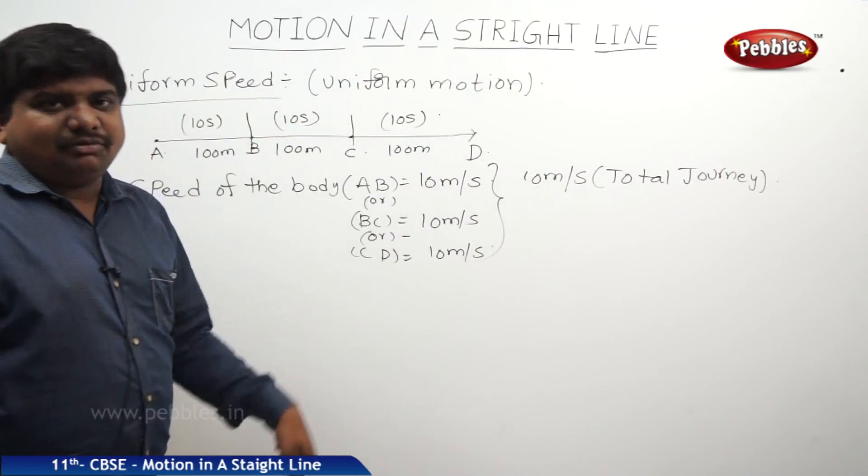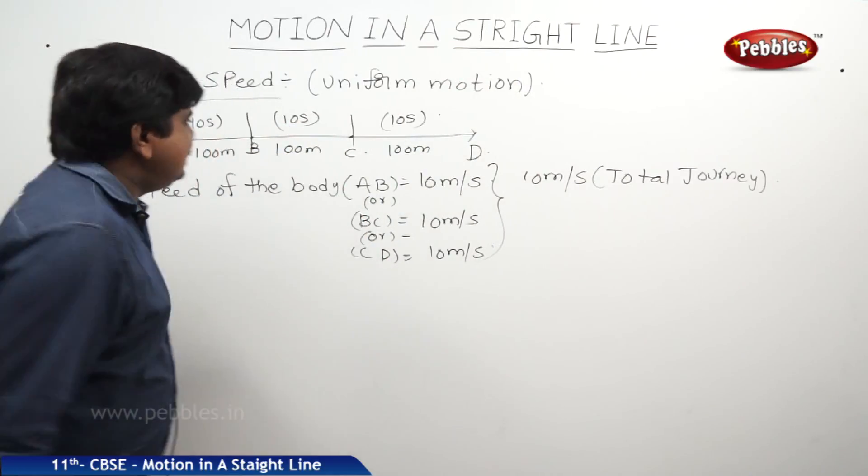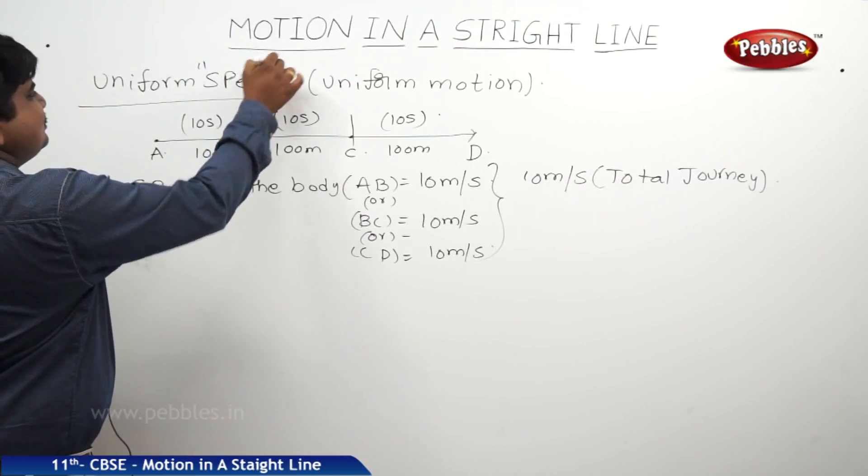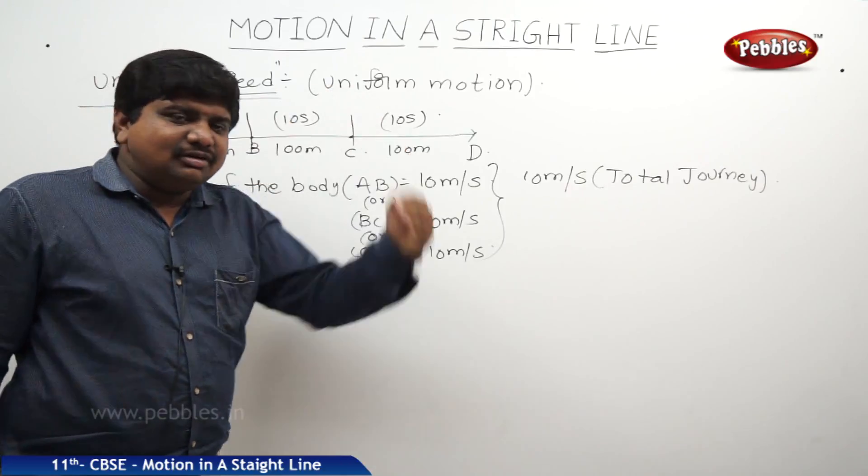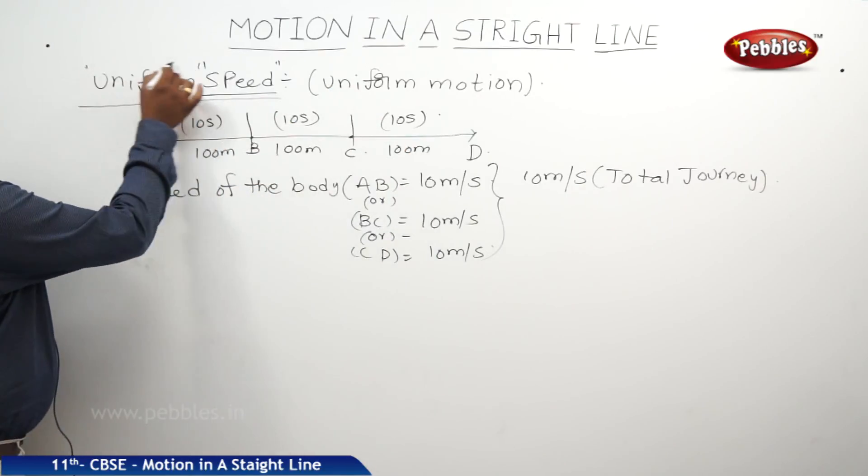In uniform motion, whether a body is executing a uniform motion, its speed or velocity is constant. This constant speed, in other words, it is called as uniform speed.